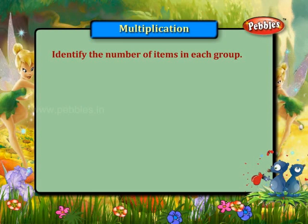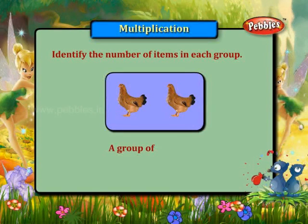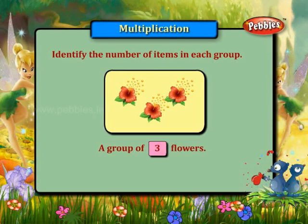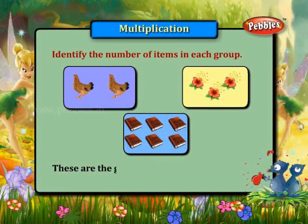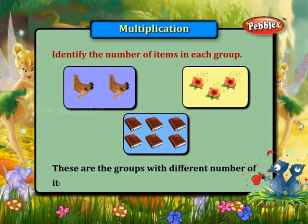Identify the number of items in each group. A group of two hens. A group of three flowers. A group of six books. These are the groups with different number of items.